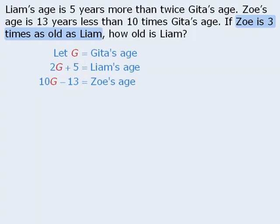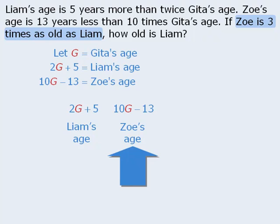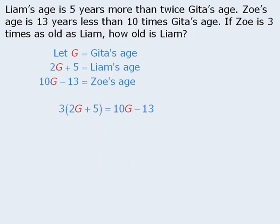Our last piece of information tells us that Zoe is 3 times as old as Liam. Here is Liam's age and here is Zoe's age. These two ages are not equal since Zoe's age is 3 times Liam's age. Our goal is to make these two values equal. So if we take Liam's age and multiply it by 3, then these two values will be equal, giving us an equation we can solve for g.